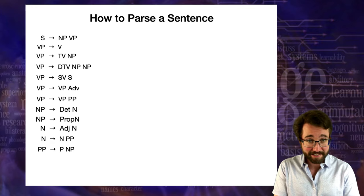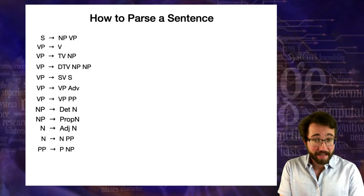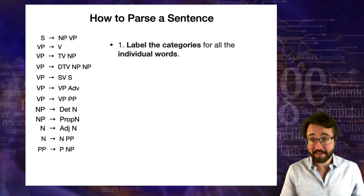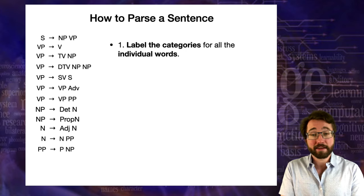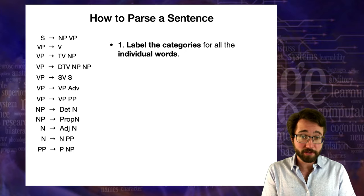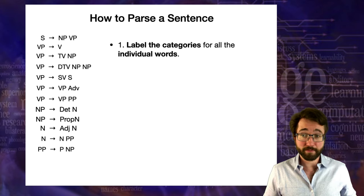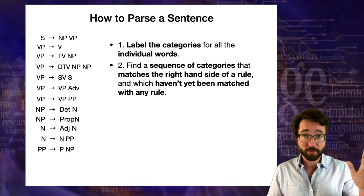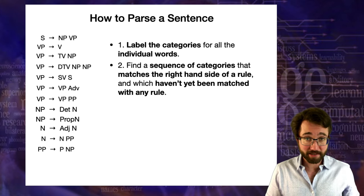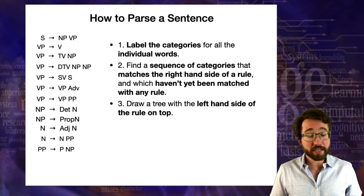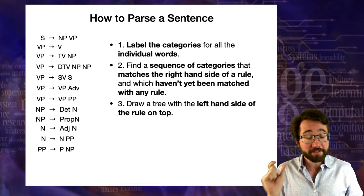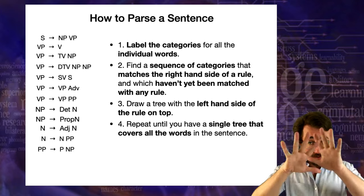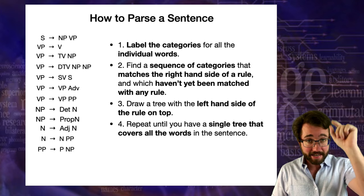Parsing a sentence can get a little tricky, so here's a recipe to follow. First, label all the categories for all the individual words. Second, find a sequence of categories that matches the right-hand side of a rule and which has not yet been matched by any rule. Third, draw a tree containing that sequence of symbols with the left-hand side of that rule on top. Repeat until you have a single tree that covers all the words in the sentence with S on the very top.